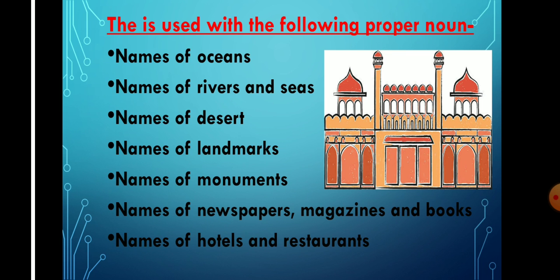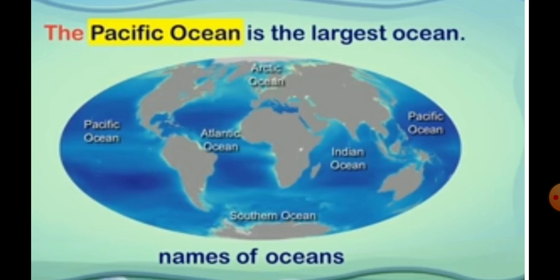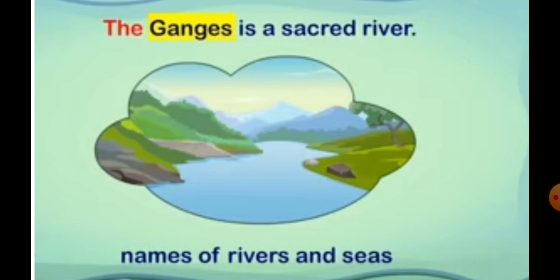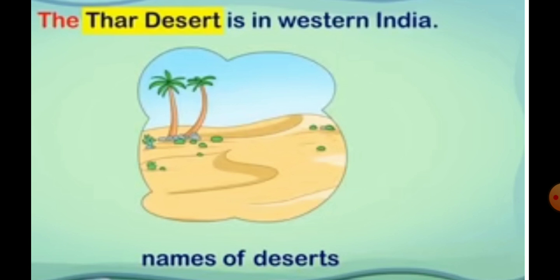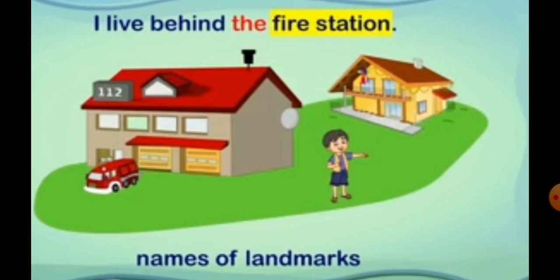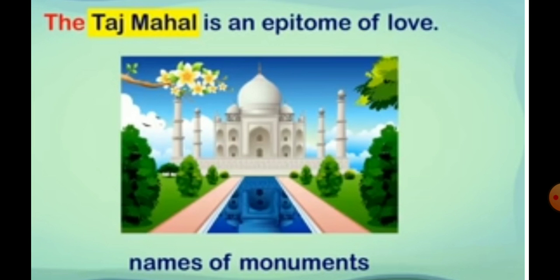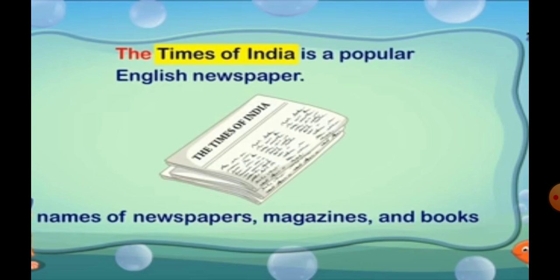Now let's understand it with the help of some examples. The Pacific Ocean is the largest ocean — Pacific is the name of an ocean, so we use THE in front of it. The Ganges is a sacred river — The Ganges is the name of the river. The Thar Desert is in Western India. We use THE before names of landmarks: I live behind the fire station. Names of monuments: the Taj Mahal is an epitome of love. THE is used with names of newspapers, magazines and books — for example, the Times of India is a popular English newspaper.